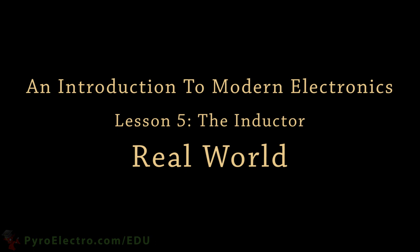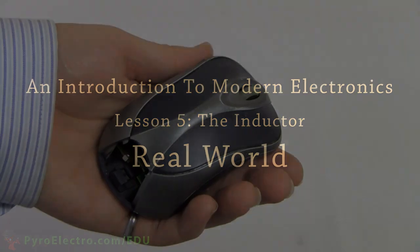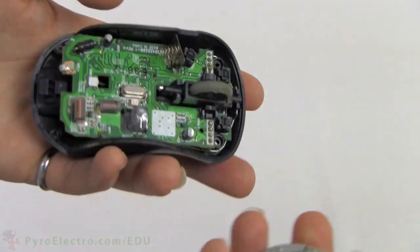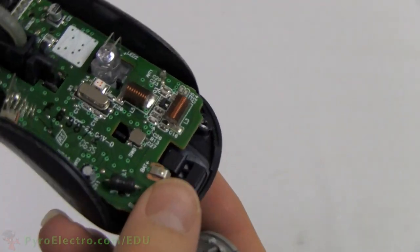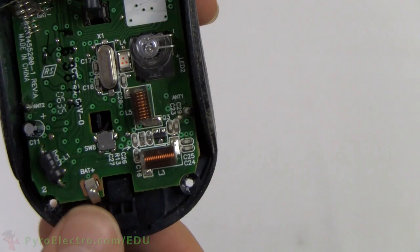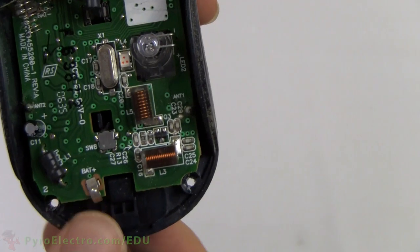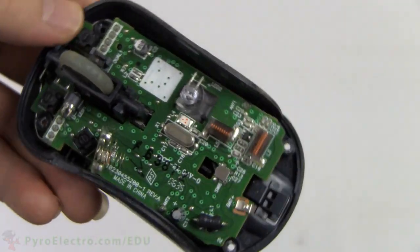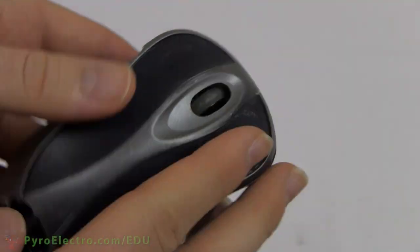Inductors are not as commonly seen in modern electronics when compared to resistors or capacitors. This just means their role is very unique and not generic like resistors. If we take a look inside of this wireless mouse, you can see right away the air coil inductor. It's a generic air coil inductor used as part of the wireless transmitter circuit, and most wireless mice have them.